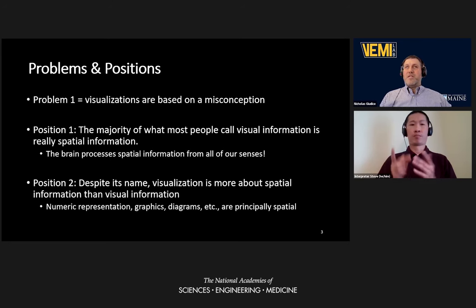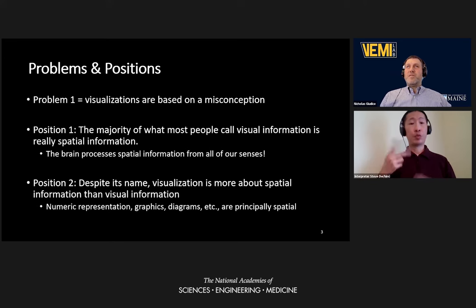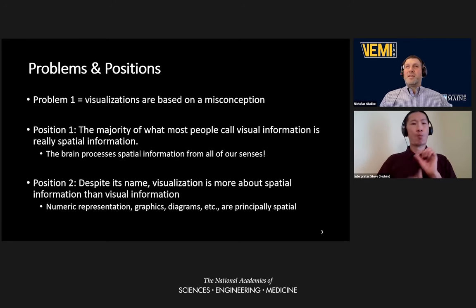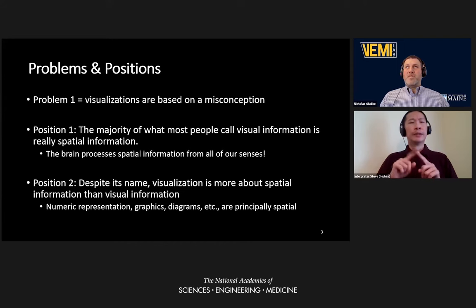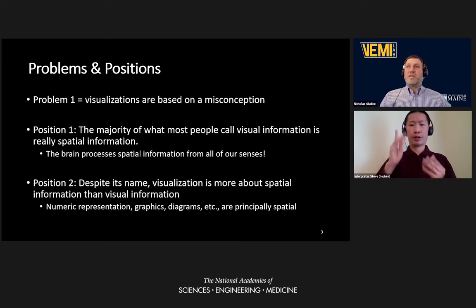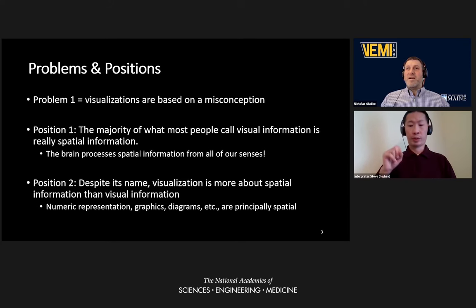My second position builds directly on the first, but it's tied specifically to visualization. P2 argues that since the vast majority of visualizations rely on vision and visual information, and since most visual information is actually spatial information, we get the logical conclusion that most visualizations actually convey spatial information. Think about the types of representations and numeric representations that you use — data graphs, figures, diagrams, photos, maps, 3D renderings. As with the room example, these all mostly are about representation of spatial information, spatial relation, and spatial configuration, and are best depicted using spatial concepts rather than visual concepts.